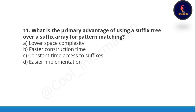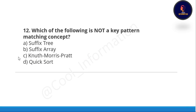Next question: what is the primary advantage of using a suffix tree over a suffix array for pattern matching? Option A is lower space complexity, option B is faster construction time, option C is constant time access to suffixes, option D is easier implementation. Many will confuse options A and C, but the correct option is C — constant time access to suffixes.